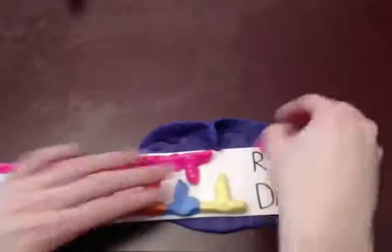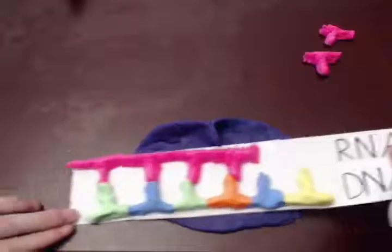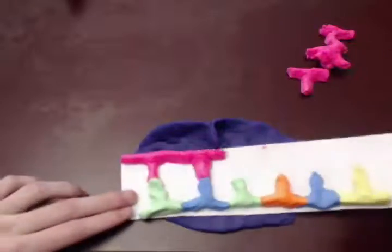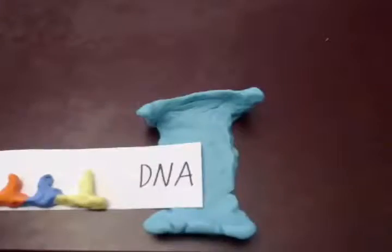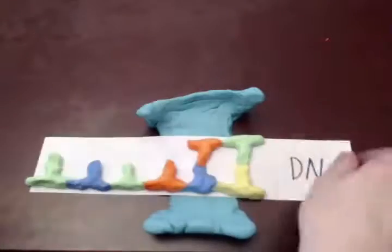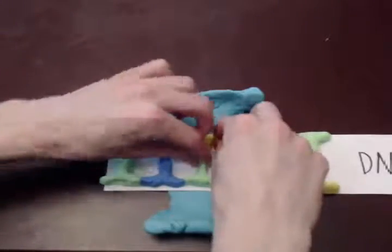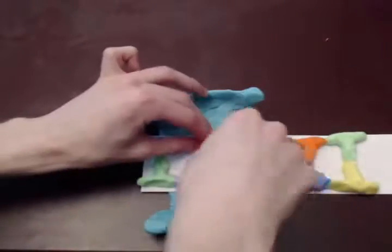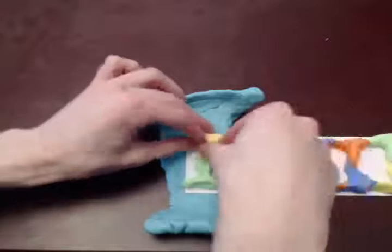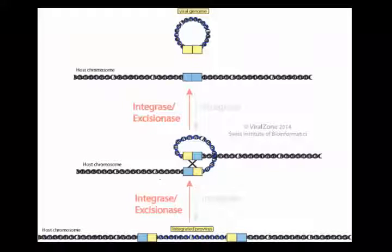Next, this complex moves through the nuclease site, where the two strands are separated by cleaving the RNA into pieces. The single-stranded piece of DNA then moves back to the polymerase site to begin synthesis of a complementary strand. The final product is a piece of double-stranded DNA that contains all of the virus's genetic material. Once this has happened, the viral DNA can be integrated into the host chromosome, where it can be transcribed, leading to the production of more viral particles.